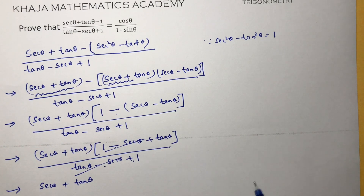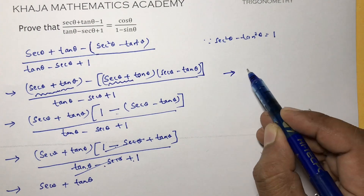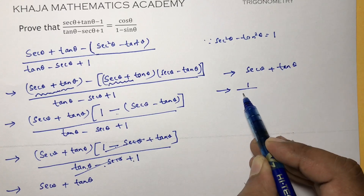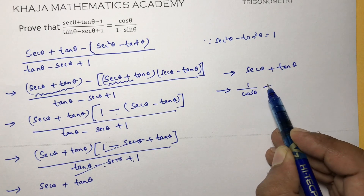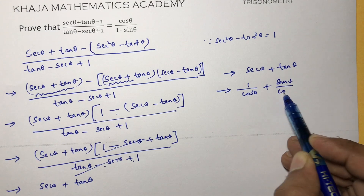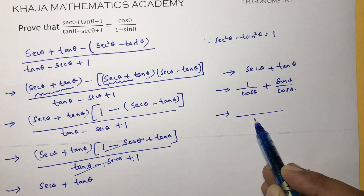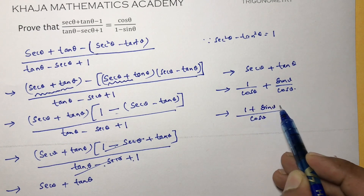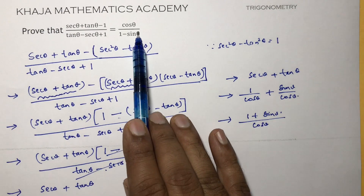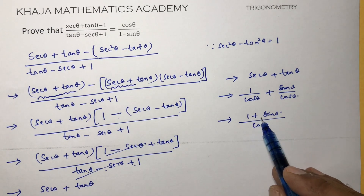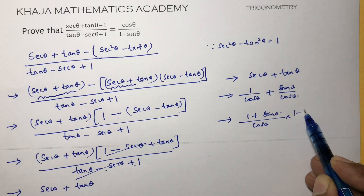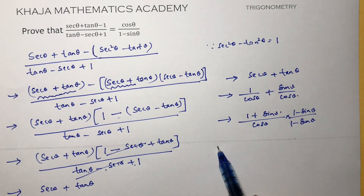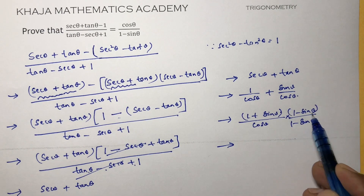But we want the answer in terms of cos and sin. Here we have (1 + sin θ) over cos θ. To get the answer, multiply and divide by (1 - sin θ): multiply numerator and denominator by (1 - sin θ). In the numerator, apply a plus b into a minus b.